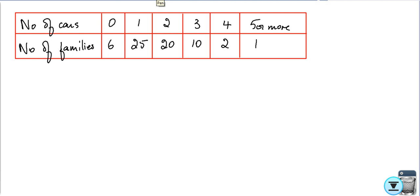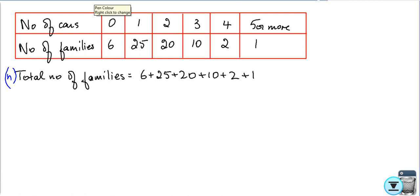I'm going to place that in a table and find the median. This time I'm not going to write all those out. What is the total number of families? The total number of families is 6 plus 25 plus 20 plus 10 plus 2 plus 1. Why is that important? That is important because that is n. So I have 25 and 6, 31 and 20, 51 and 10, 61, 63, 64. So we have 64 families.